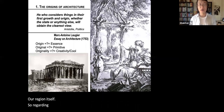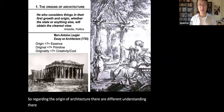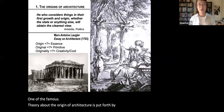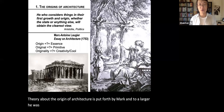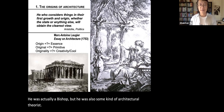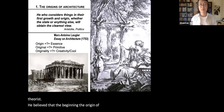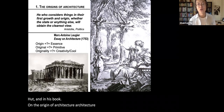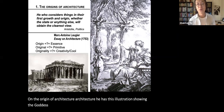Regarding the origin of architecture, there are different understandings and different theories — it is not surprising. One of the famous theories about the origin of architecture was put forth by Marc-Antoine Laugier. He was an 18th-century French bishop who was also an architectural theorist. He believed that the origin of architecture is the primitive hut.